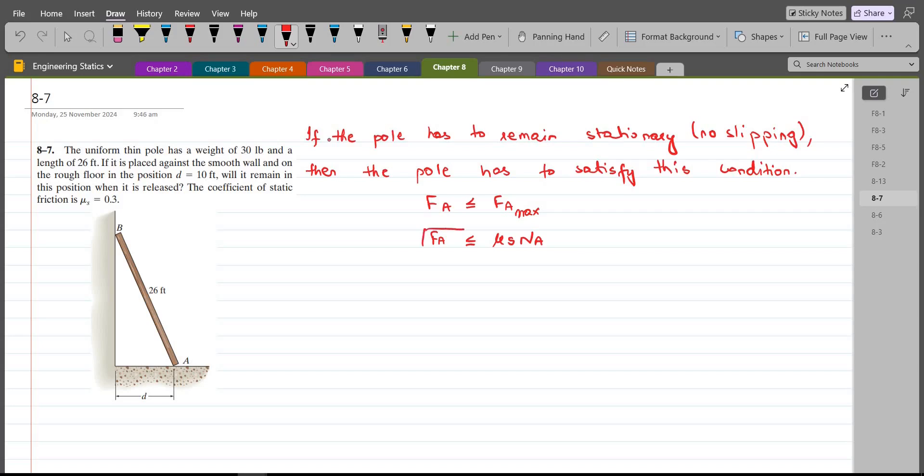So, we have to prove this condition if there is sufficient friction to keep this pole in this position, where the pole remains stationary against the wall. Now, to solve this problem, first of all, we have to draw the free body diagram.